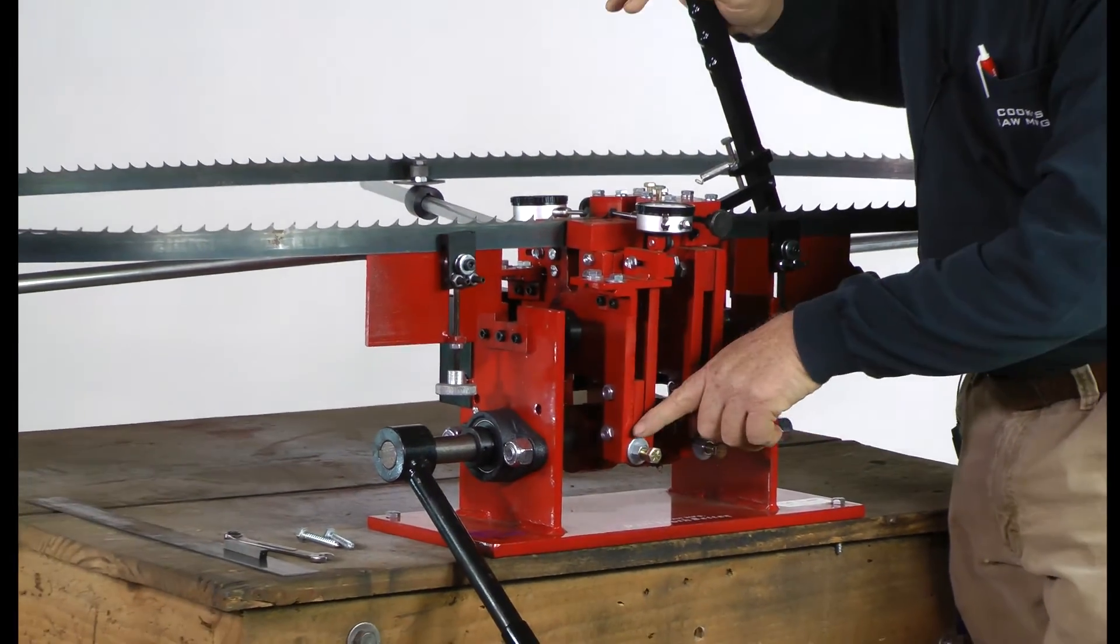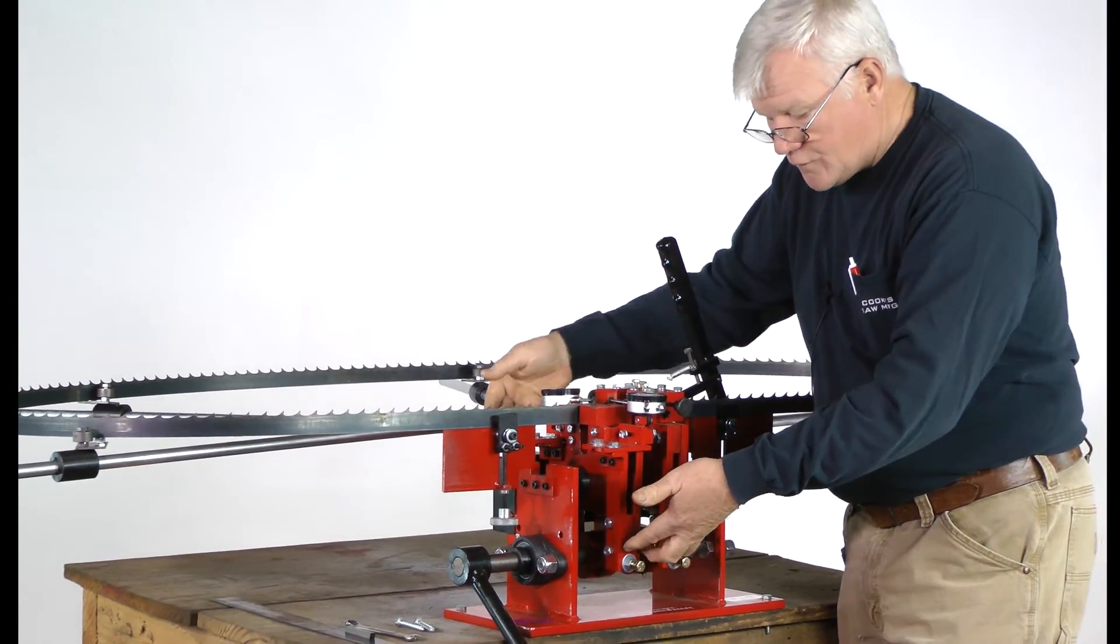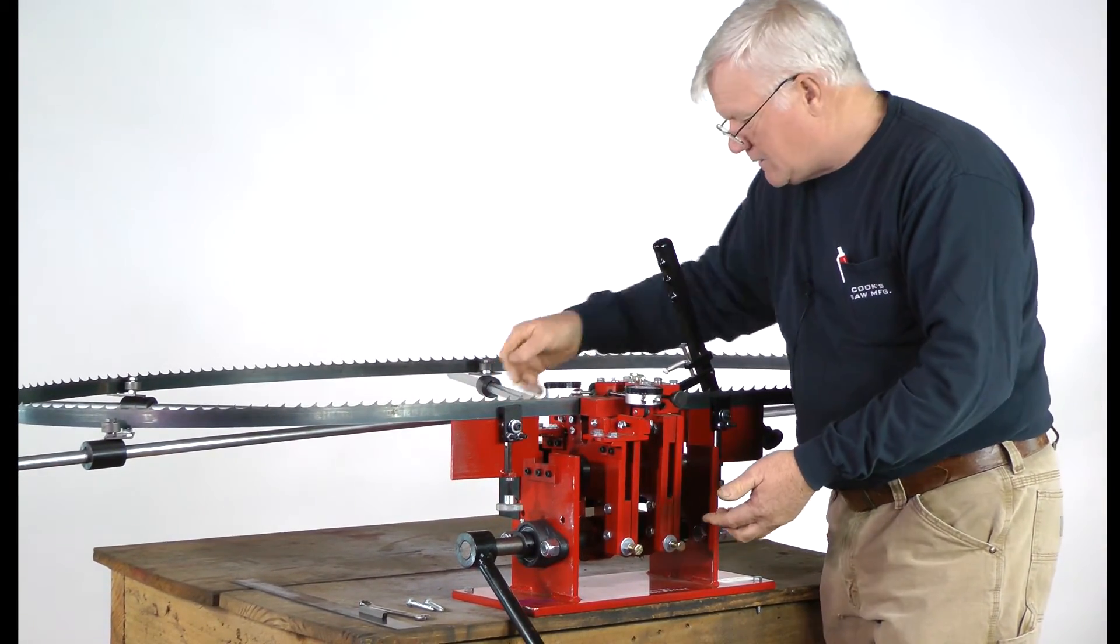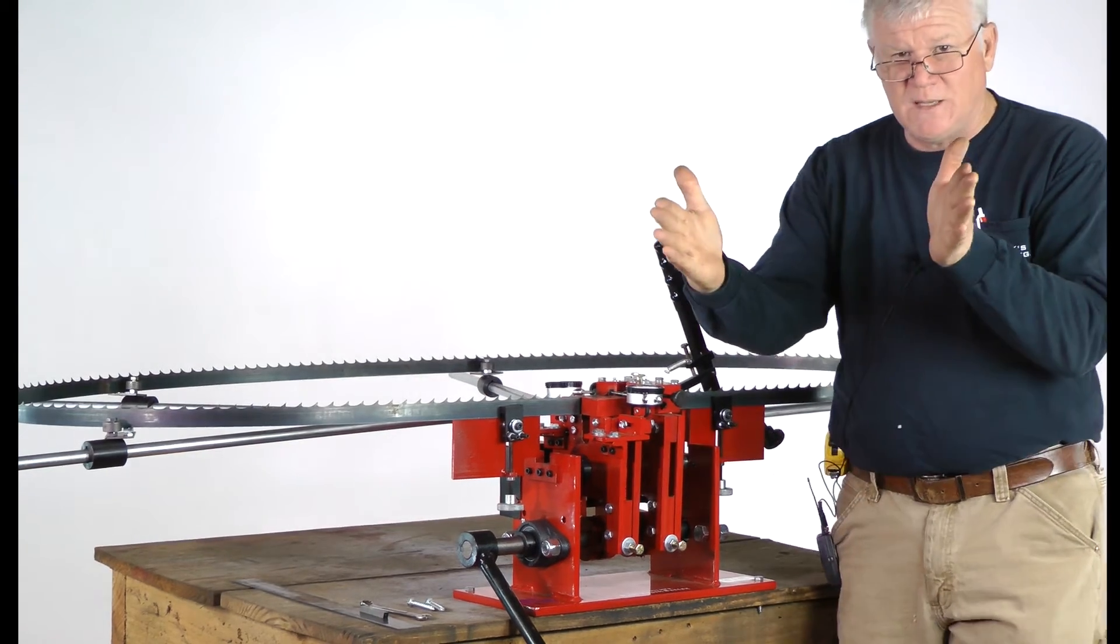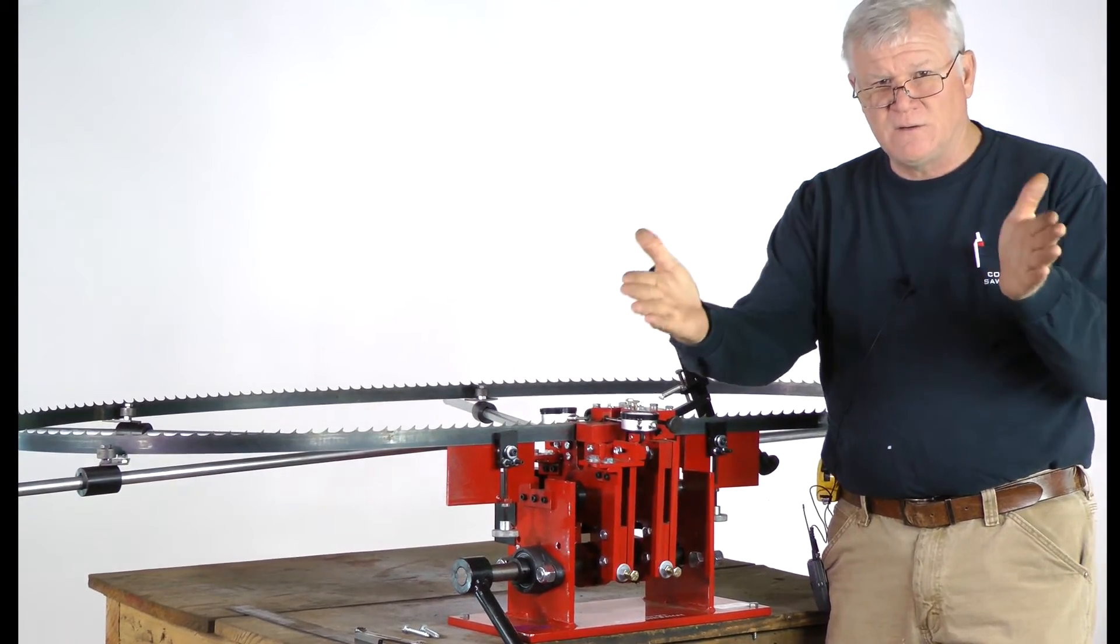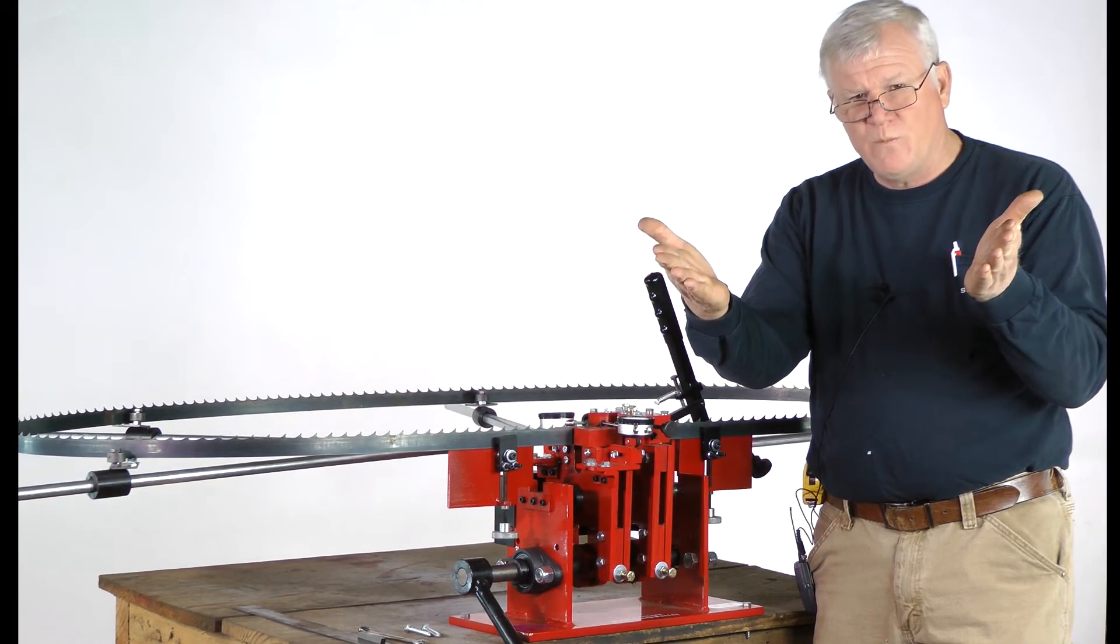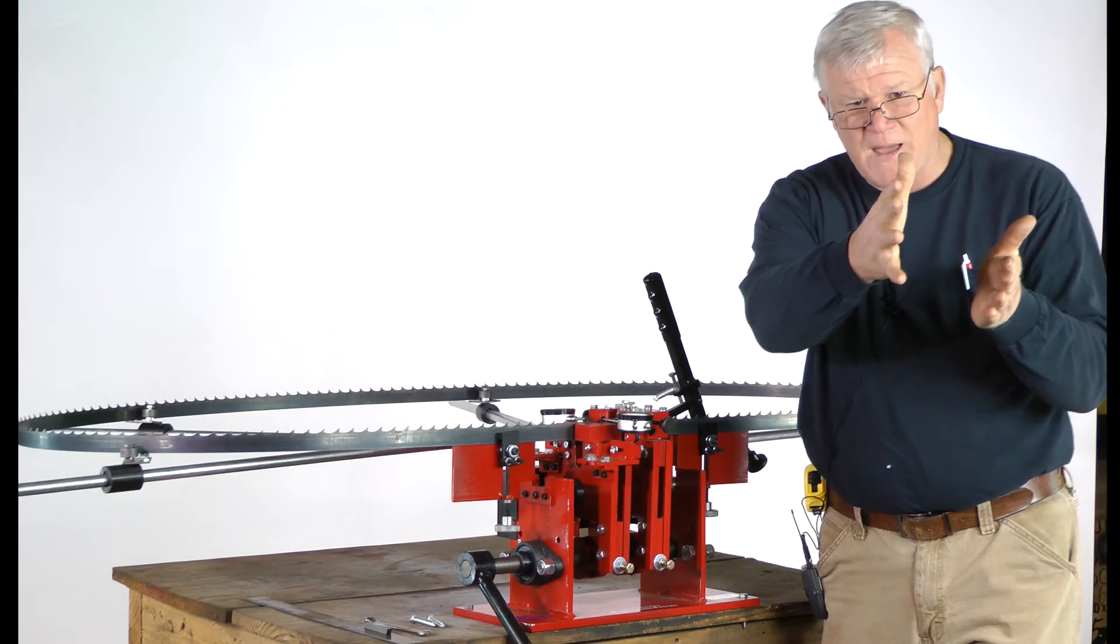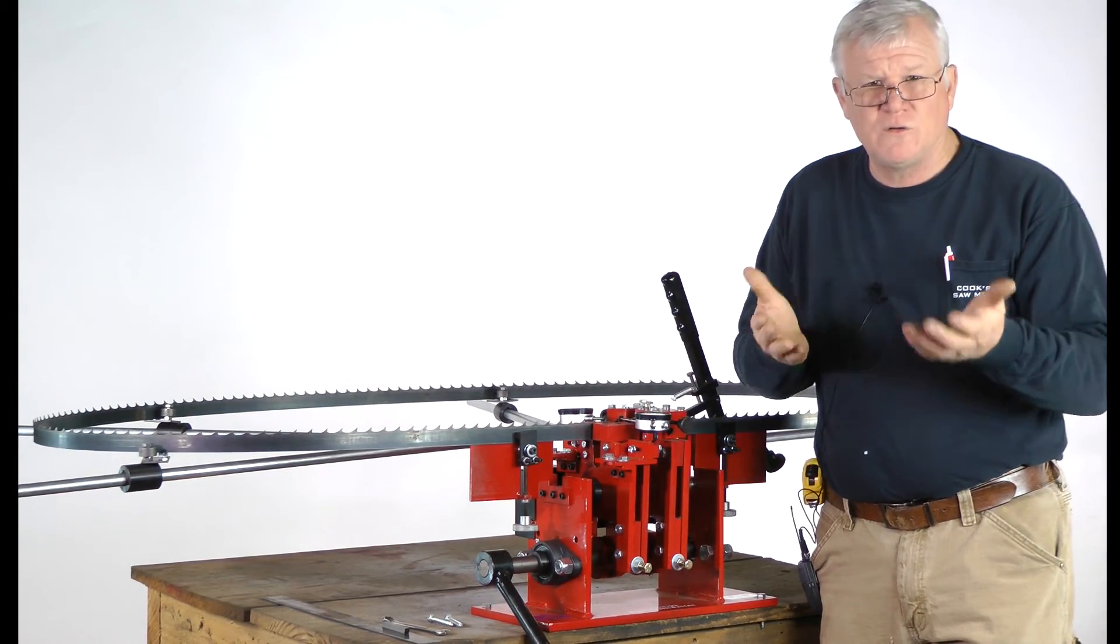We have adjustments on each one of the jaw clamps on the front and in the back. The ones in the back you can't see but there's adjustments back there so we can come together in the center every time like this. The reason we want to fall open like that is so the blade can pass through with no damage being done to the tooling or to the tooth.